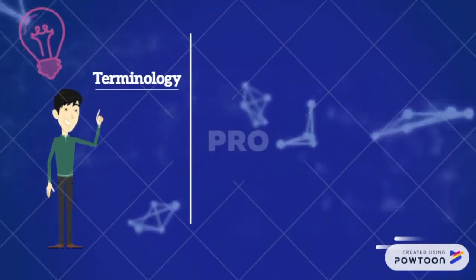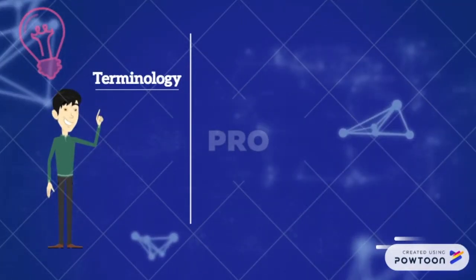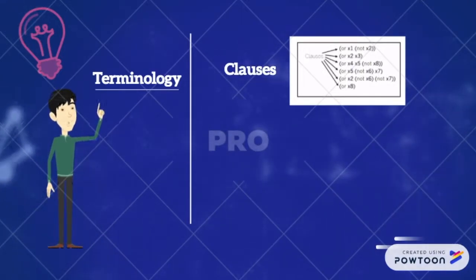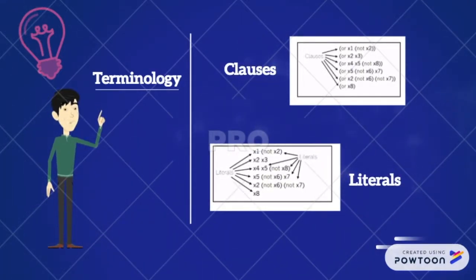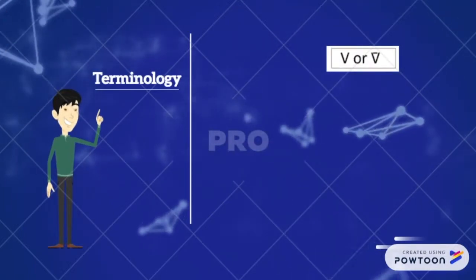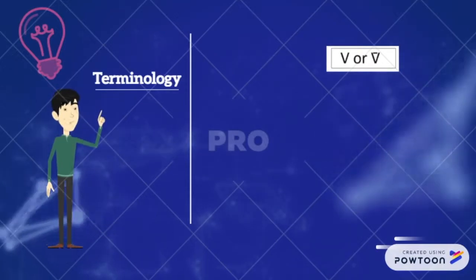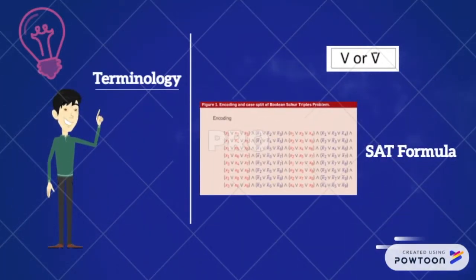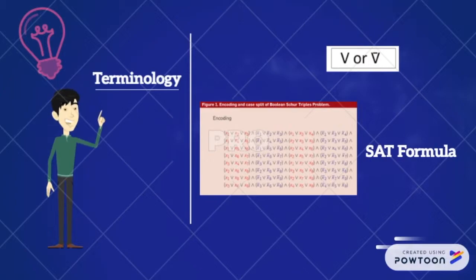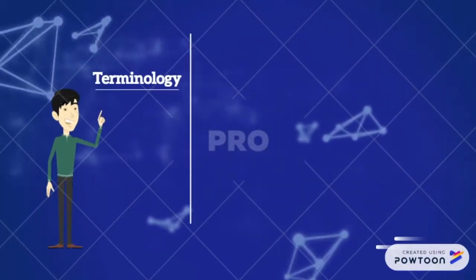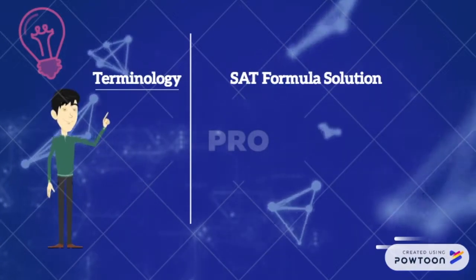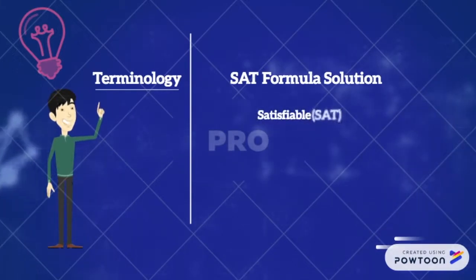SAT solving uses a boolean variable v that receives either true or false, and which is constrained by clauses. These clauses are disjunctions of literals — disjunctions are expressions using logical AND and OR. A literal variable x receives value v or the negation of v, so x can be true or false and the negation can also be true or false depending on the first assignment. A SAT formula is a conjunction of clauses; a clause is satisfied when at least one of its literals is true.